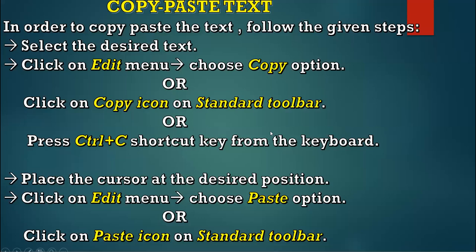To summarize the steps for copy-paste: first method — select the desired text, click on Edit menu, choose the copy option. Or click on the copy icon on standard toolbar. Or press Ctrl+C shortcut key. Or right-click and choose the copy option. Then click at the place where you want to paste, click on Edit menu and choose the paste option, or click on paste icon on standard toolbar, or press Ctrl+V shortcut key from the keyboard.